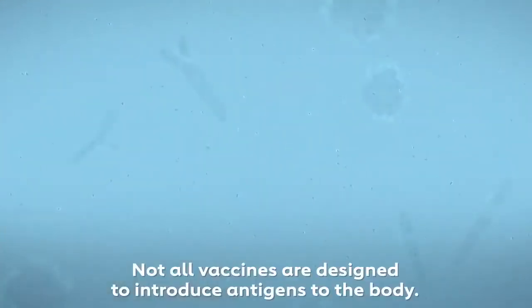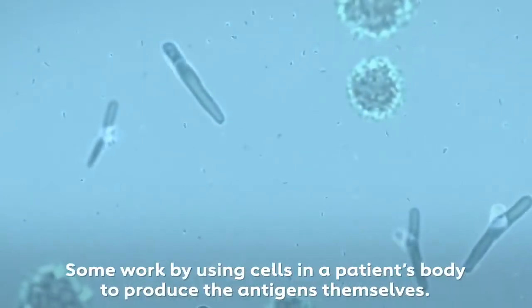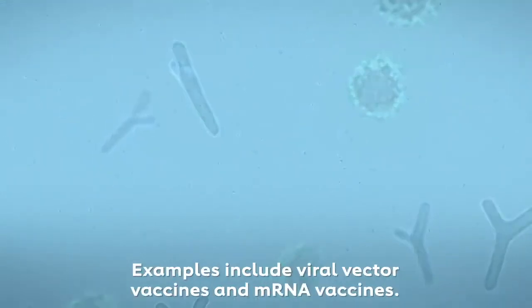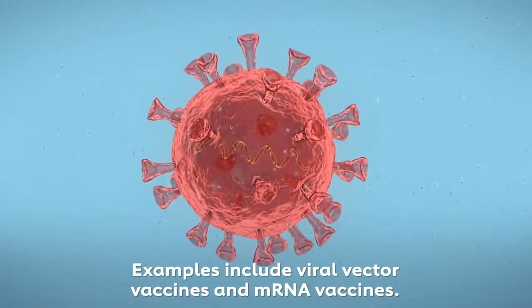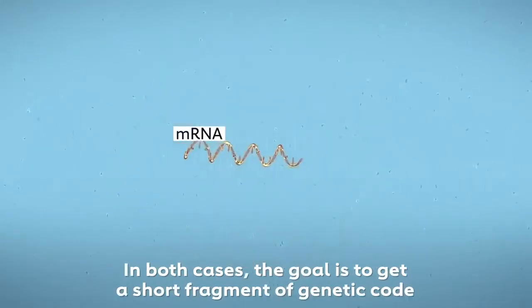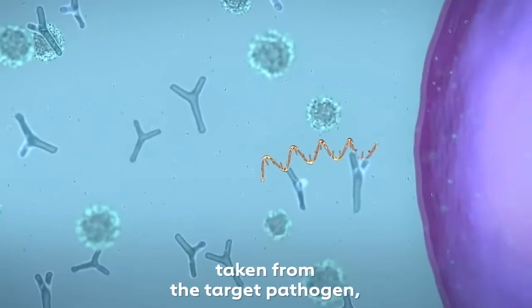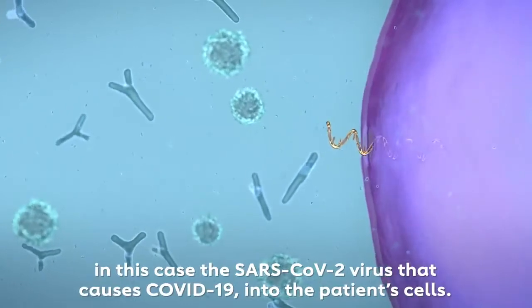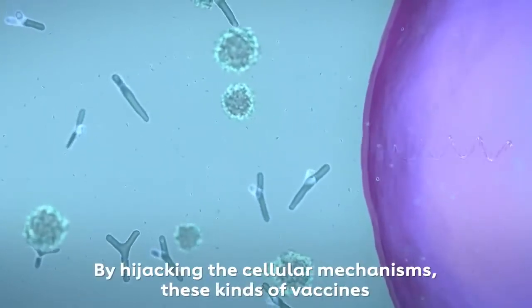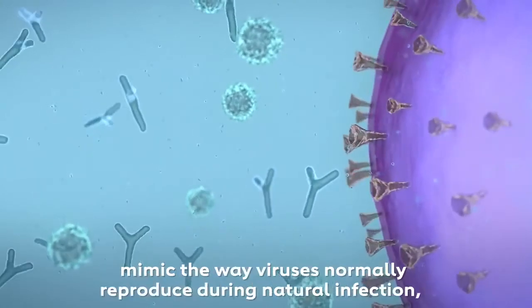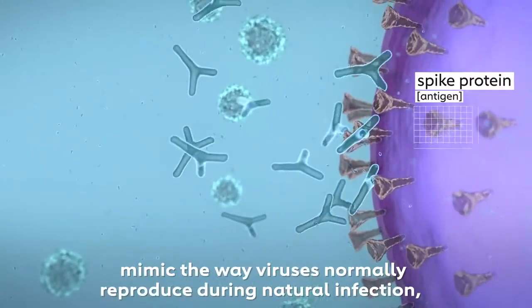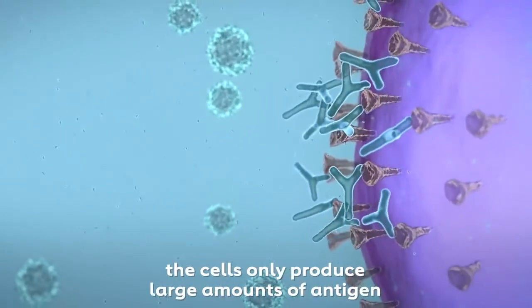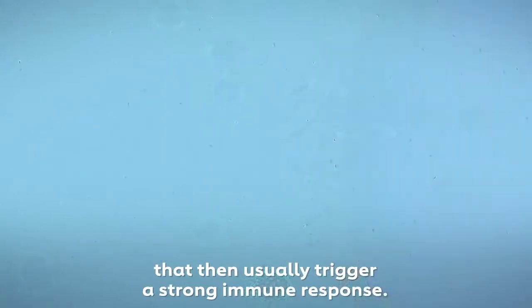Not all vaccines are designed to introduce antigens to the body. Some work by using cells in a patient's body to produce the antigens themselves. Examples include viral vector vaccines and mRNA vaccines. In both cases, the goal is to get a short fragment of genetic code taken from the target pathogen, in this case the SARS-CoV-2 virus that causes COVID-19, into the patient's cells. By hijacking the cellular mechanisms, these kinds of vaccines mimic the way viruses normally reproduce during natural infection. But rather than creating copies of the virus, the cells only produce large amounts of antigen, that then usually trigger a strong immune response.